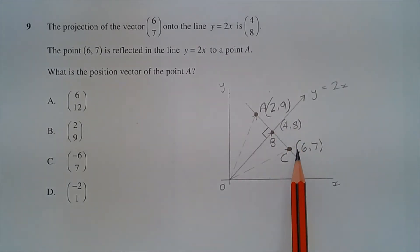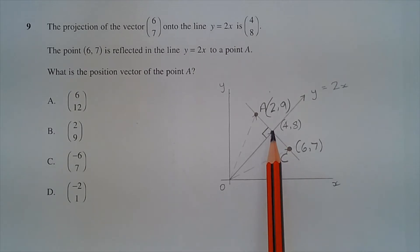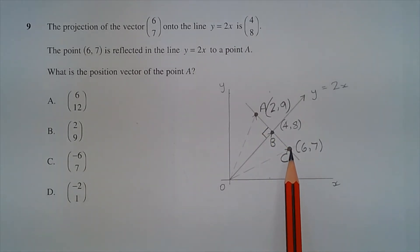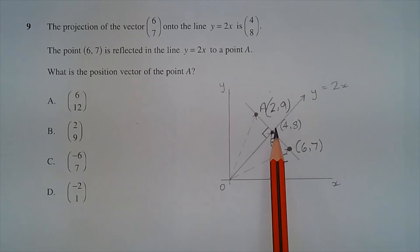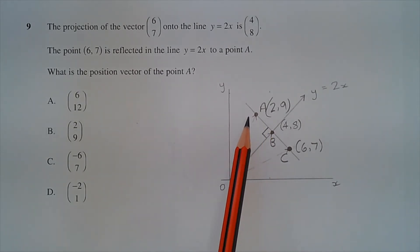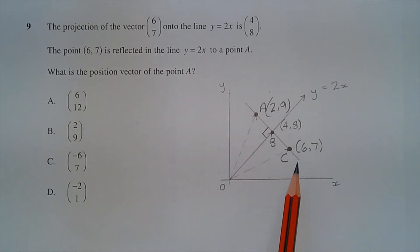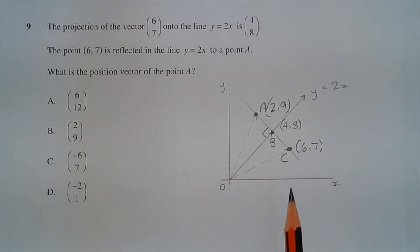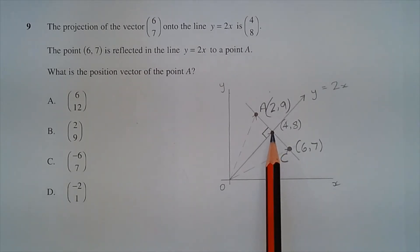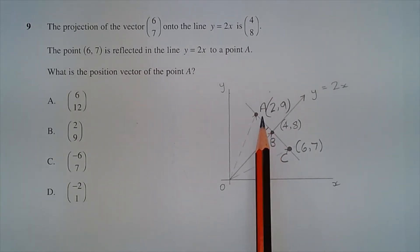Point C is reflected in the line y equals 2x to a point A such that the distance from point C to point B is equal to the distance from point B to point A, and the gradient AC is perpendicular to the line y equals 2x. The horizontal distance from point C to point B is equal to the horizontal distance from point B to point A.